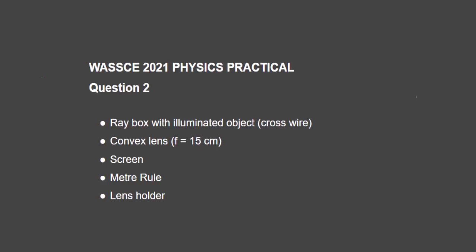Let's start with the apparatus provided to you. You'll be given a ray box with an illuminated object, a convex lens whose focal length is 15cm, a screen, a meter rule, and finally a lens holder.